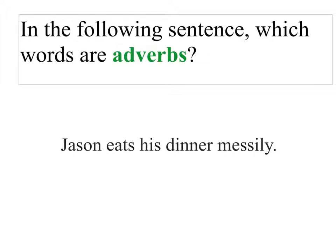All right, let's practice. In the following sentence, which of the words are adverbs? 'Jason eats his dinner messily.' This one's fairly easy because of the -ly, so messily is the adverb. And what is the verb it modifies? Eats. How does he eat? He eats messily. One way to find an adverb is to identify the verb and then look for words that answer those questions. If you identified the verb eats, you could ask how does he eat — he eats messily.